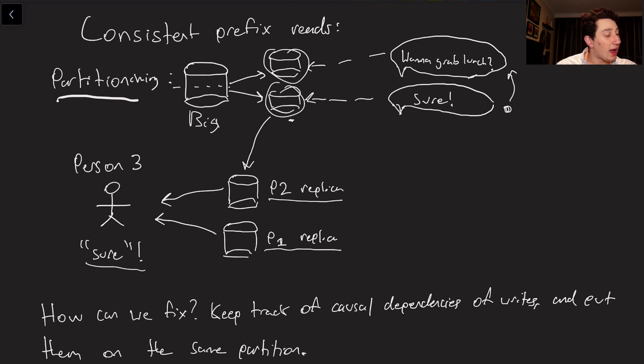But let's say that there was some reply feature in our application, a button that literally says reply, and then the person wrote sure in response to want to grab lunch. What we could do is say, okay, every time someone uses the reply functionality to respond to a message, let's make sure that they're actually both going to the same partition. That way, the messages from that partition are going to be sent in order to their replica. And we won't have to deal with any lack of consistent prefix reads, right? This will allow us to make sure that all causally dependent writes are going to be on the same replica, which will solve our issue.